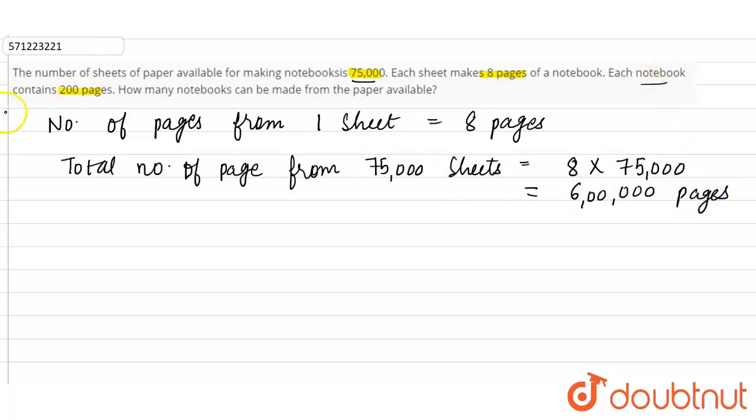Now it is given each notebook contains 200 pages, and how many notebooks can be made from the paper available? So the total number of pages are 6 lakhs and we need to find number of notebooks that can be made, right?